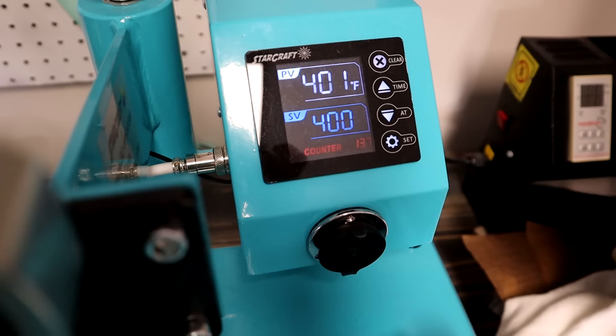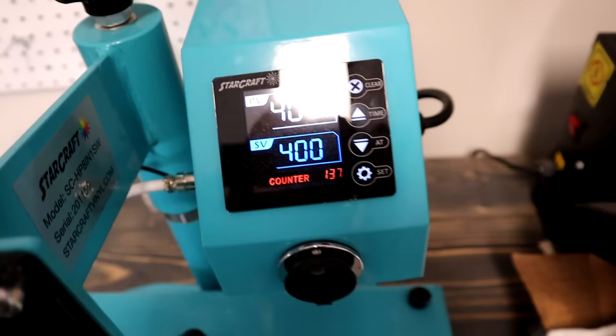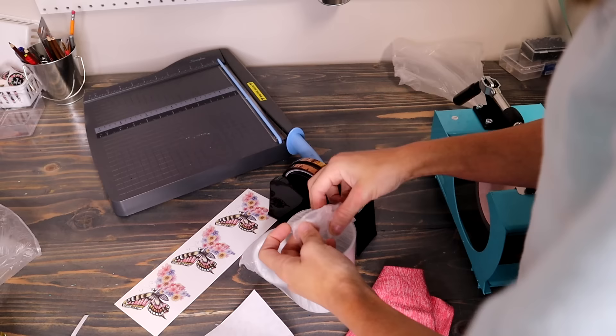Now something important to note, the timer is not going to work with this. You have to close the platen in order for the timer to start counting down. That's something I want to mention, but definitely go ahead and set your press to around 385 to 400 to start.